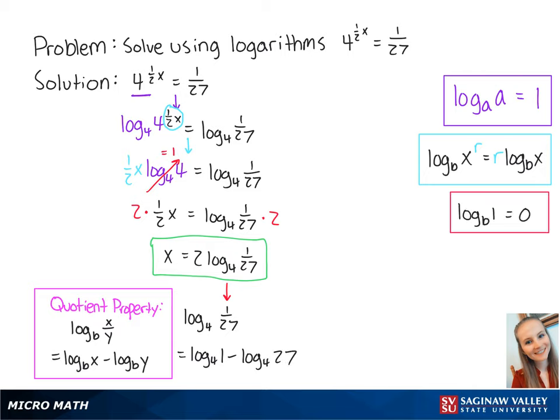Any log of 1 is equal to 0. So the log base 4 of 1 is equal to 0. We can rewrite the equation as x equals 2 times the negative log base 4 of 27. 27 is equal to 3 to the 3rd power.